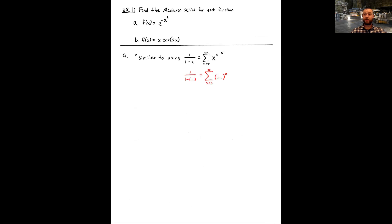These examples are much like our first set of problems, where we manipulated 1/(1−x) — writing the expression as 1 minus a negative, or replacing x with x/2 if there's a factor of 2 in the denominator. Now instead of the series for 1/(1−x), we'll use Maclaurin series for e to the x and cosine of x as our starting points.